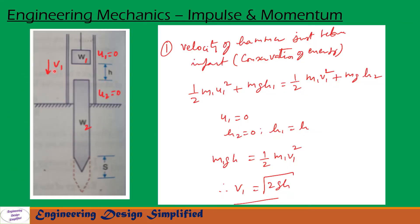First let us derive the equation to find the velocity of the hammer just before impact. Initially the hammer is raised to a height h. At this point the initial velocity of hammer u1 equals zero and the initial velocity of pile u2 is also equal to zero. After rising to height h the hammer is dropped freely. Just before impact the hammer reaches a velocity v1. Applying the conservation of energy equation: half·m1·u1² + m1·g·h1 = half·m1·v1² + m1·g·h2. Here u1 is the initial velocity and m1·g·h1 is the potential energy, with h1 equal to h.